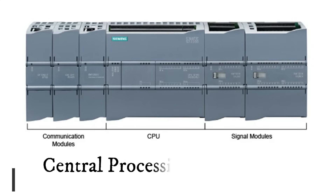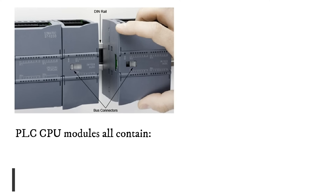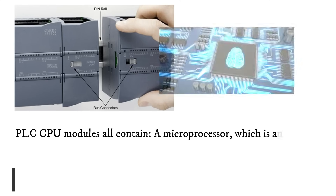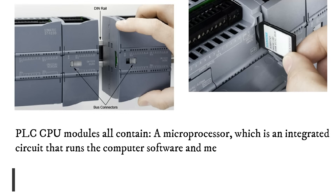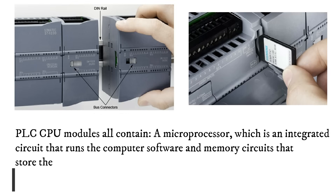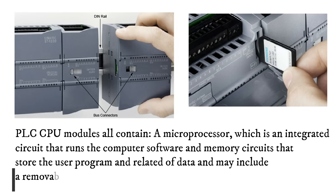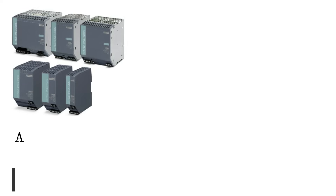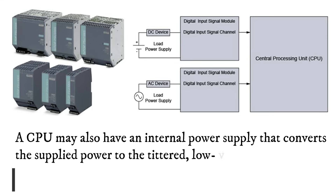PLC CPU modules all contain a microprocessor, which is an integrated circuit that runs the computer software, and memory circuits that store the user program and related data, and may include a removable memory card. A CPU may also have an internal power supply that converts the supplied power to the filtered, low voltage DC needed by internal circuits.